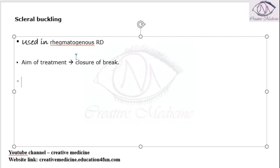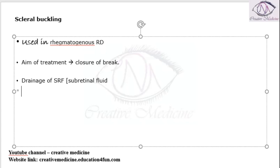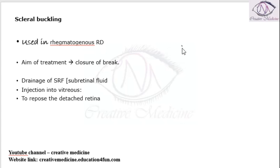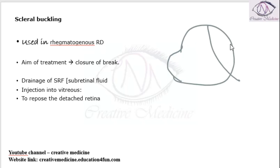First, we drain the sub-retinal fluid that is present. Then we inject certain substances into the vitreous. Following this, we repose the detached retina — the fluid between the retina and the retinal pigment epithelium is taken out first.